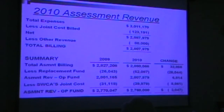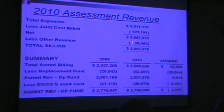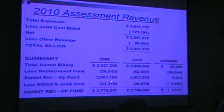Let me get to the calculation of how we determine the assessment each one of us will receive in about another month. First and foremost, we start with the top number — the three million dollar figure. From that we subtract the revenue we're going to get from Copper Leaf, Spring Run, Lighthouse Bay, and the Bonita Bay group for joint cost. We also subtract miscellaneous revenue — interest income and miscellaneous fees — so we arrive at a billing of $2,807,000 to $2,808,000.